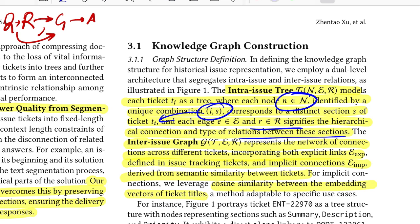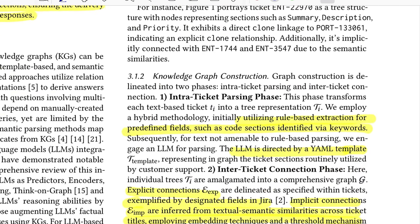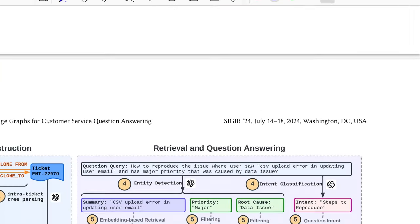Talking about the knowledge graph construction, for the intra issue tree that they create, each node is identified as a unique combination of the sections that belong to that ticket and that ticket title. You can have all types of relations that relate these sections. For inter issue, you define a graph with two kinds of links: one is explicit link, then you have implicit link. Implicit is based on the semantic similarity between the tickets, and explicit is defined based on if the platform has any tracking or back reference, just like Stack Overflow, GitHub issues.